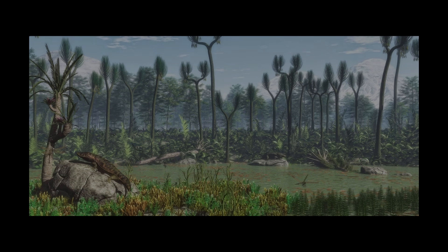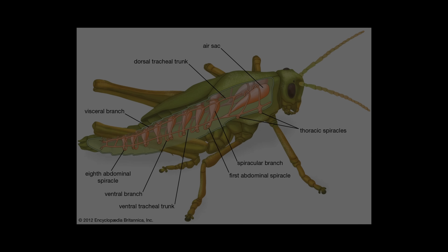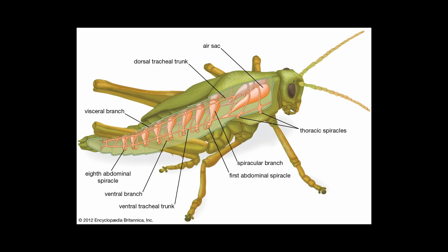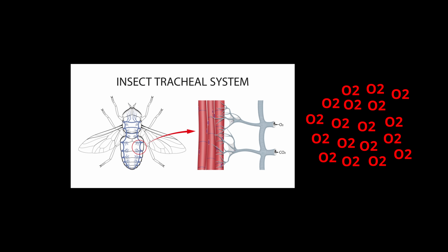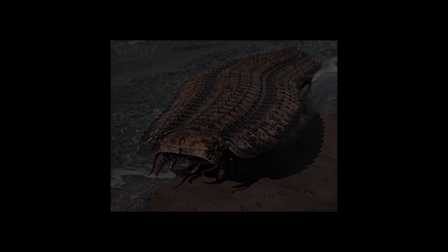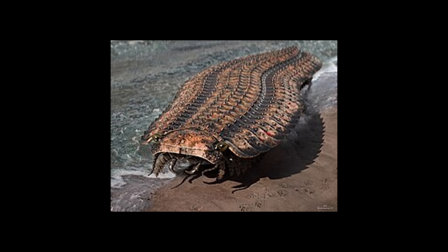And this is where the giants come in. Bugs don't have lungs. They breathe through a network of tiny tubes called trachea that pipe air directly to their tissues. It's efficient for small bodies, but it doesn't scale well. The bigger you get, the harder it is to deliver oxygen to your cells — unless you crank up the oxygen content of the entire atmosphere. Suddenly that limitation evaporates, and insects respond by getting absolutely massive.